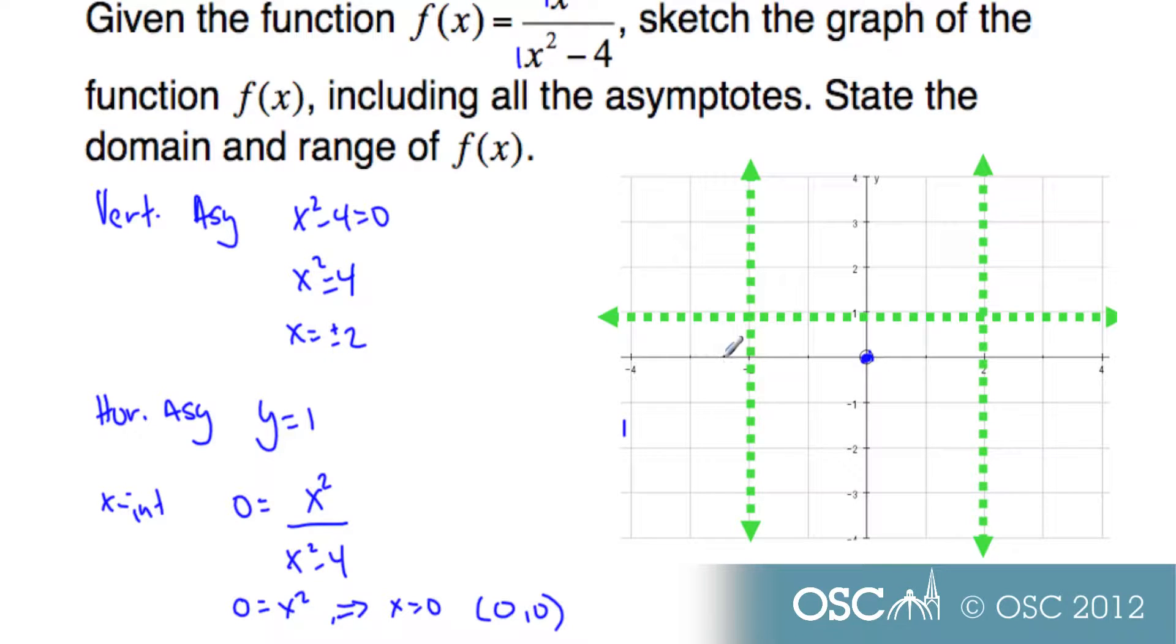That is the only x-intercept that exists. That means there are no x-intercepts here. The curve cannot come here. So therefore, I know it is up in this region here. Similarly, the curve cannot be over here. It doesn't cross x-axis. It must follow the asymptotes over in this region here.